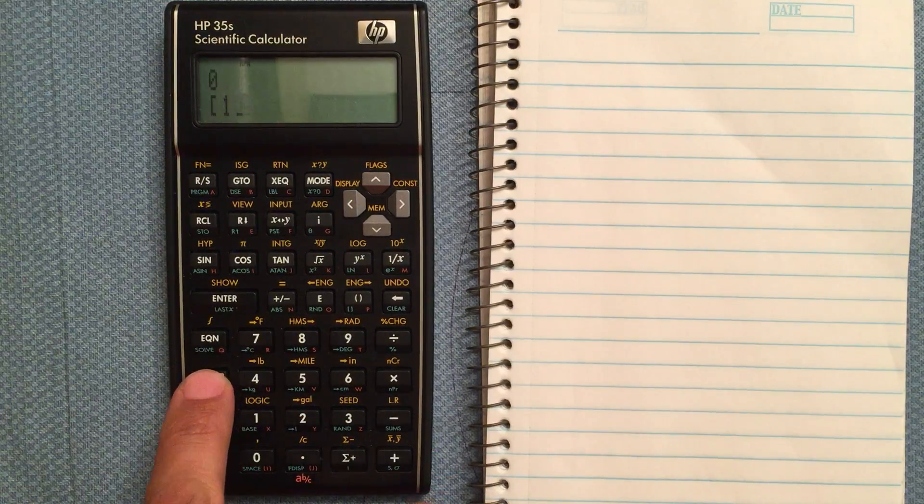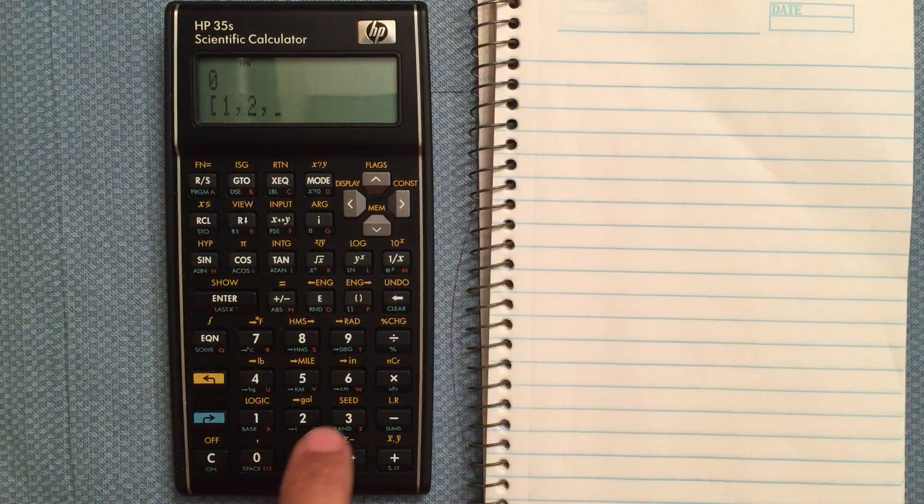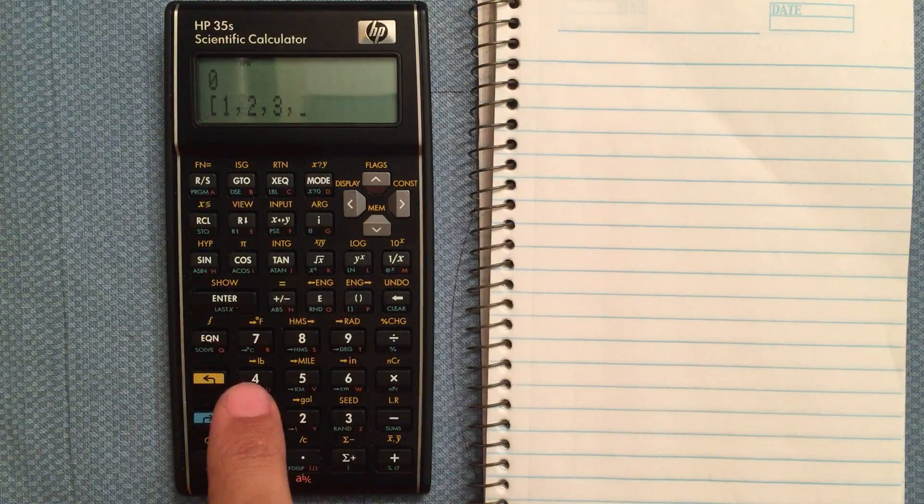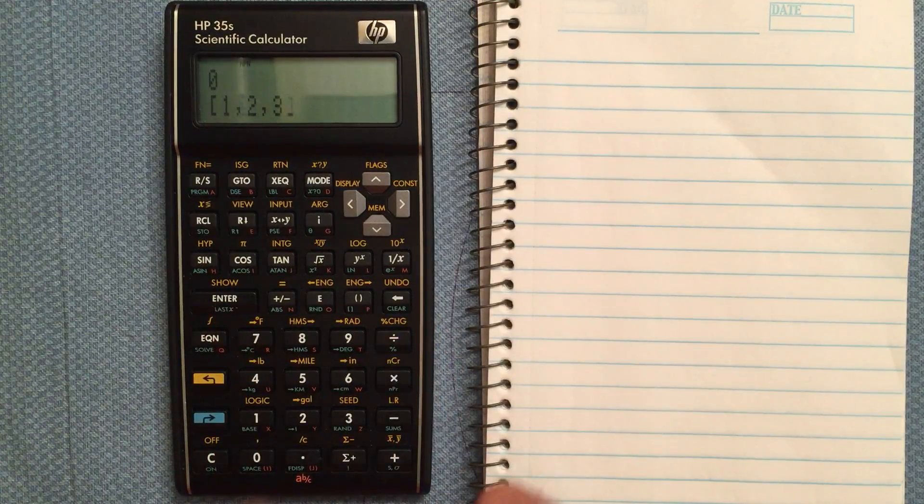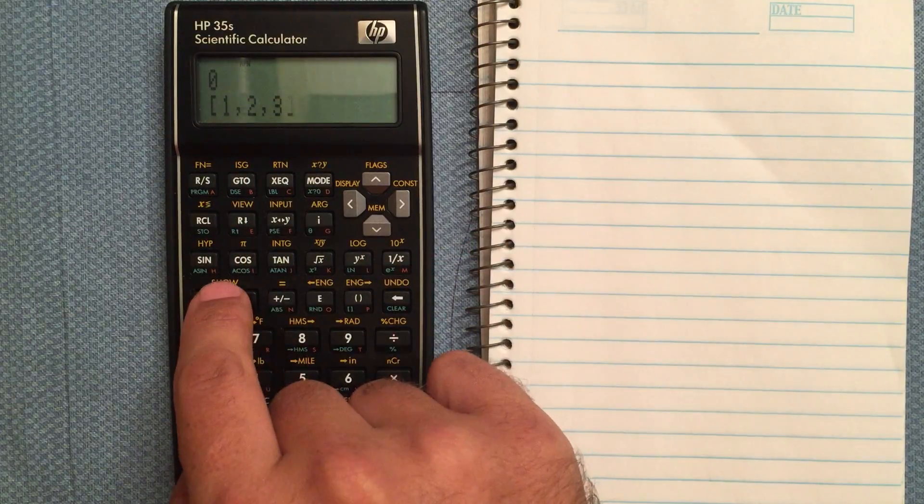So I want to do one, and then I do gold shift comma, two comma, three. This calculator is only capable of two or three length vectors, so hit enter.